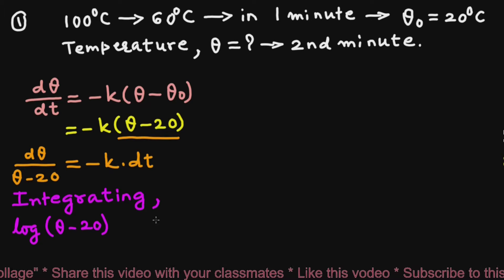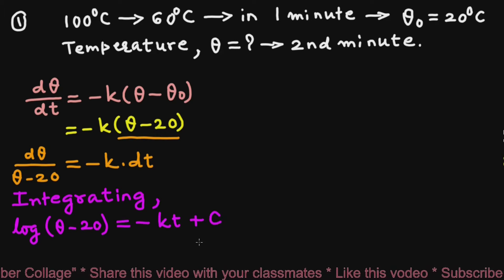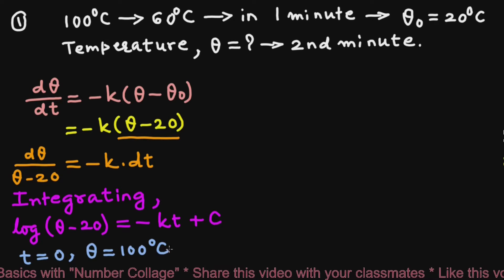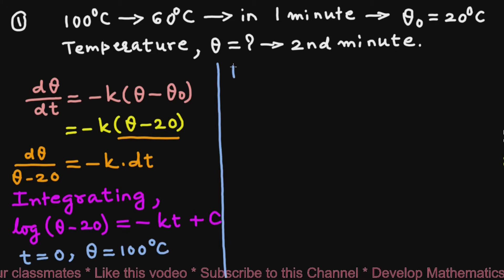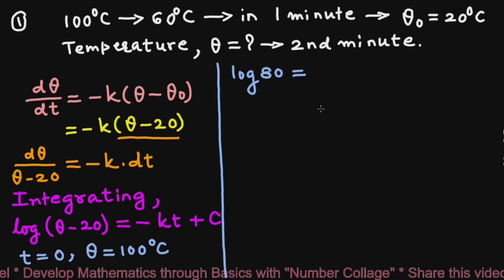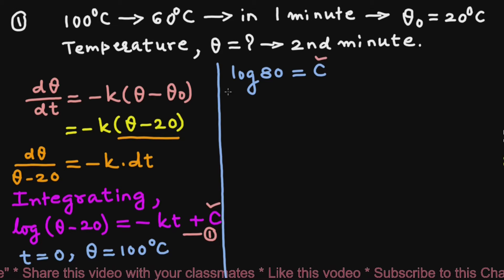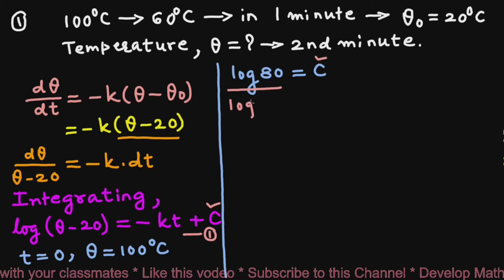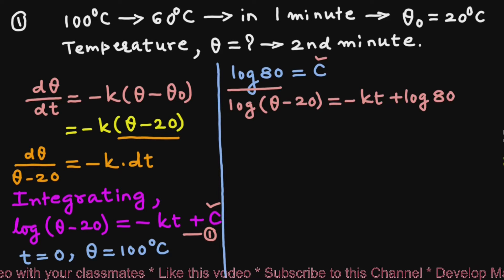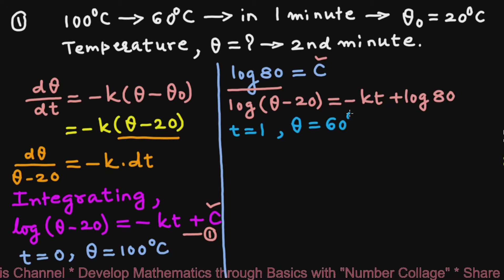we get log(θ − 20) = −kt + c. Initially, when t = 0, θ = 100°C. So we get log(100 − 20) = log 80 = c. After putting the value of c, the equation becomes log(θ − 20) = −kt + log 80. Next, it is given that when t = 1, θ = 60°C.